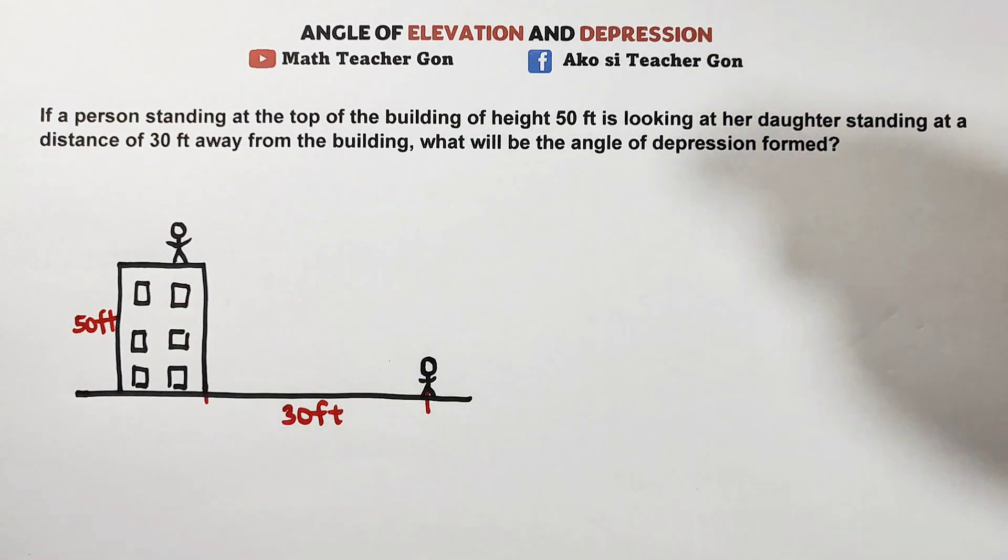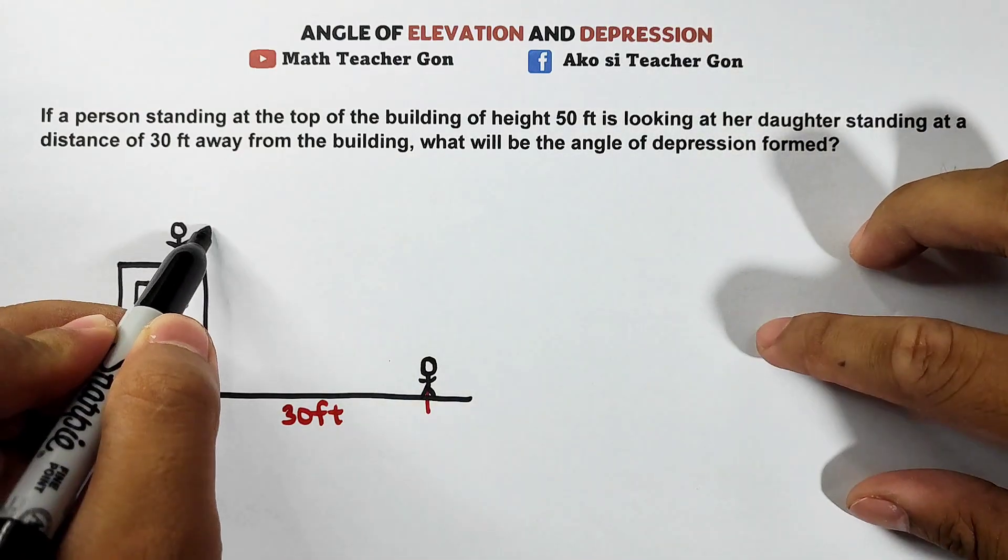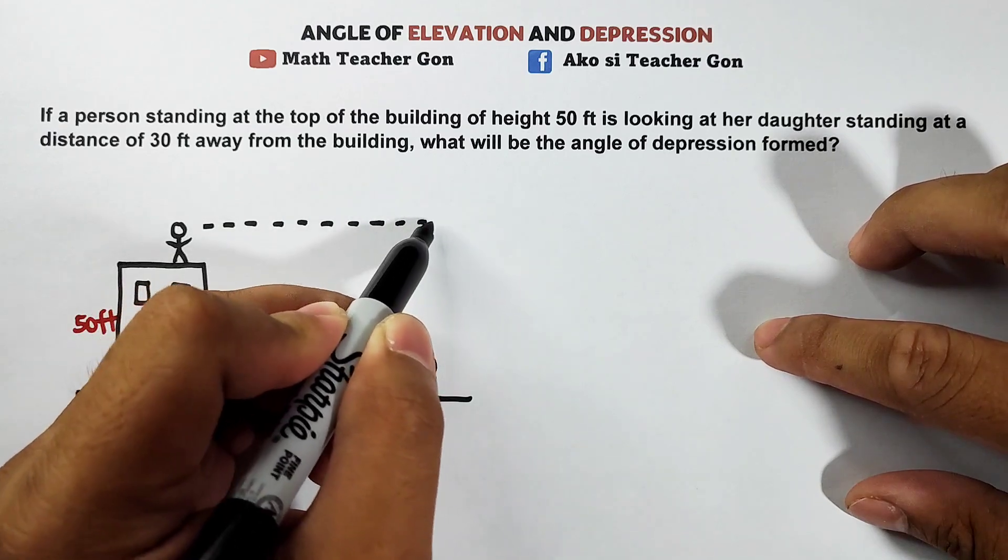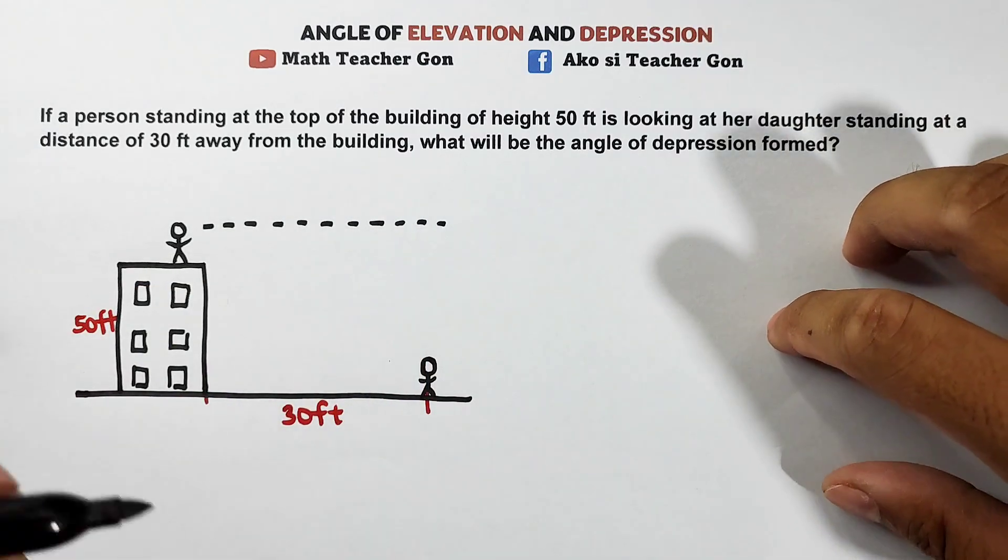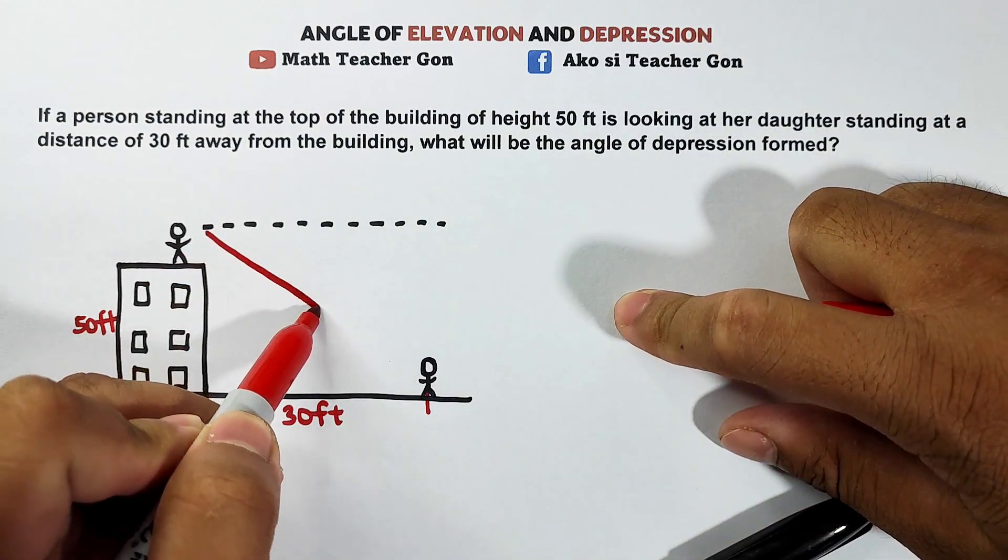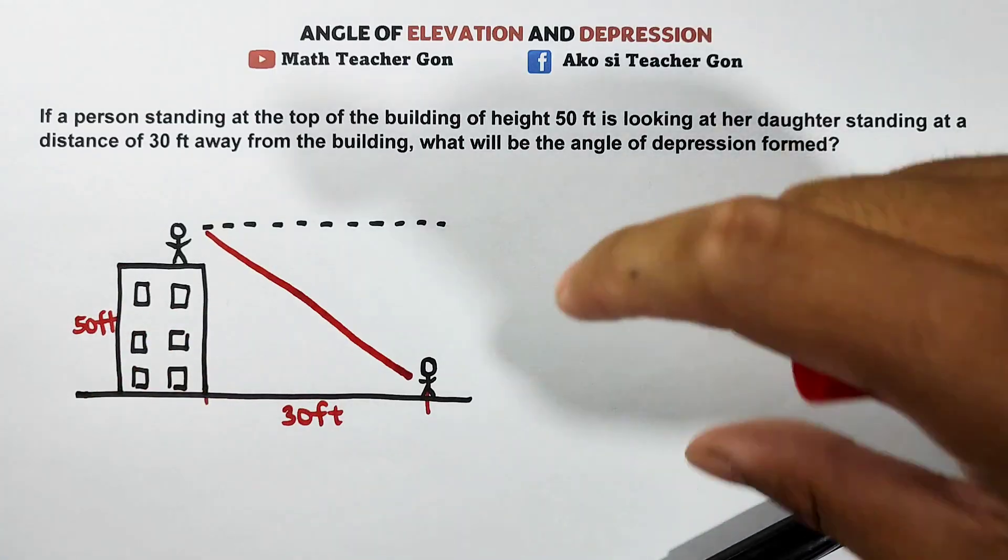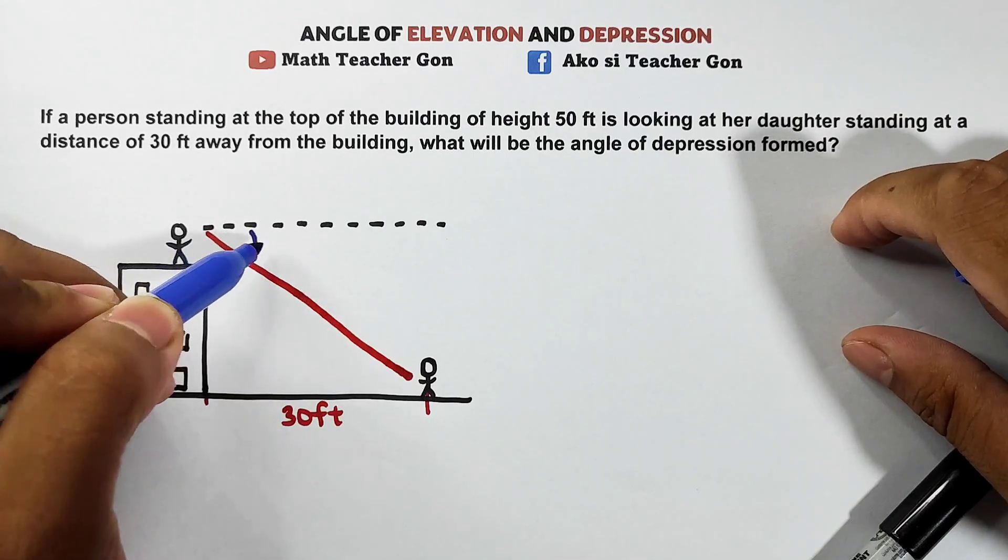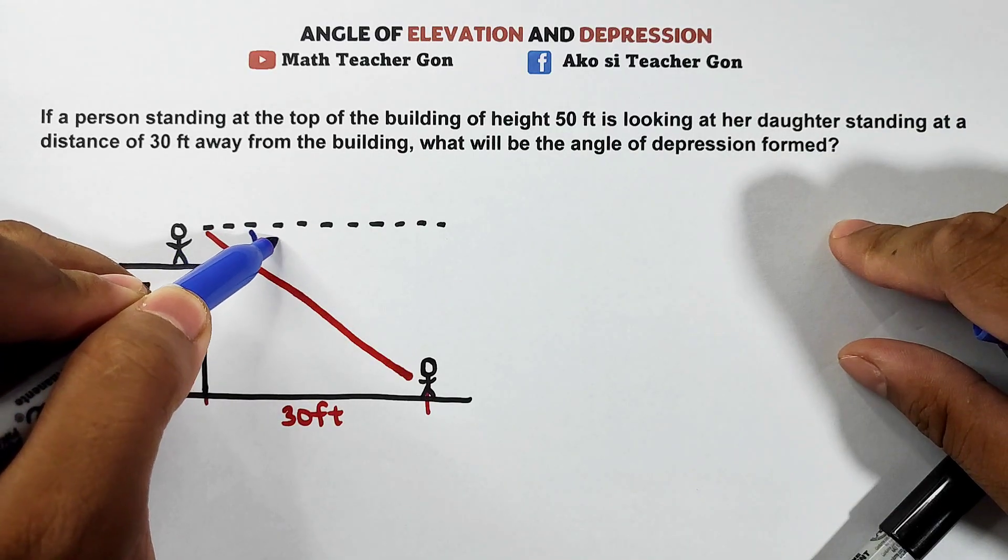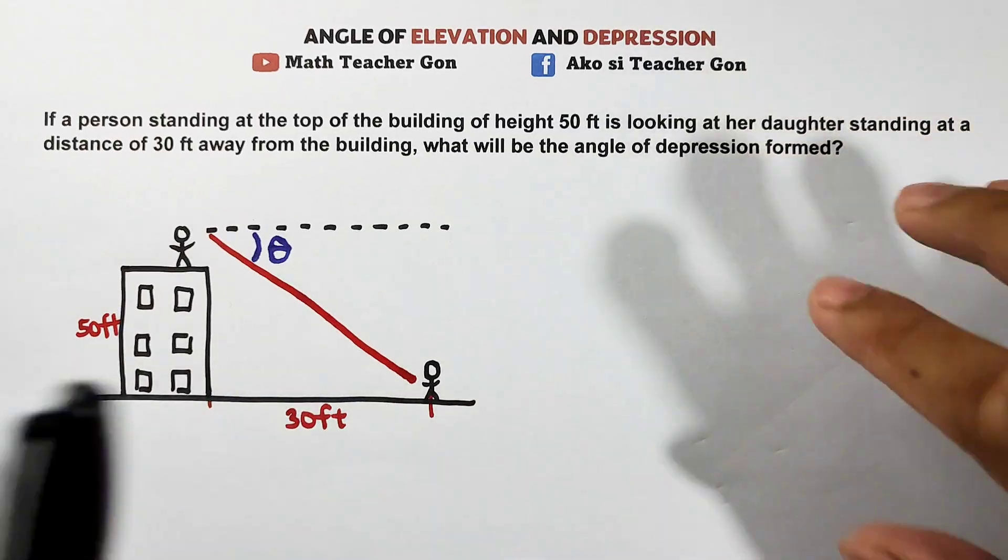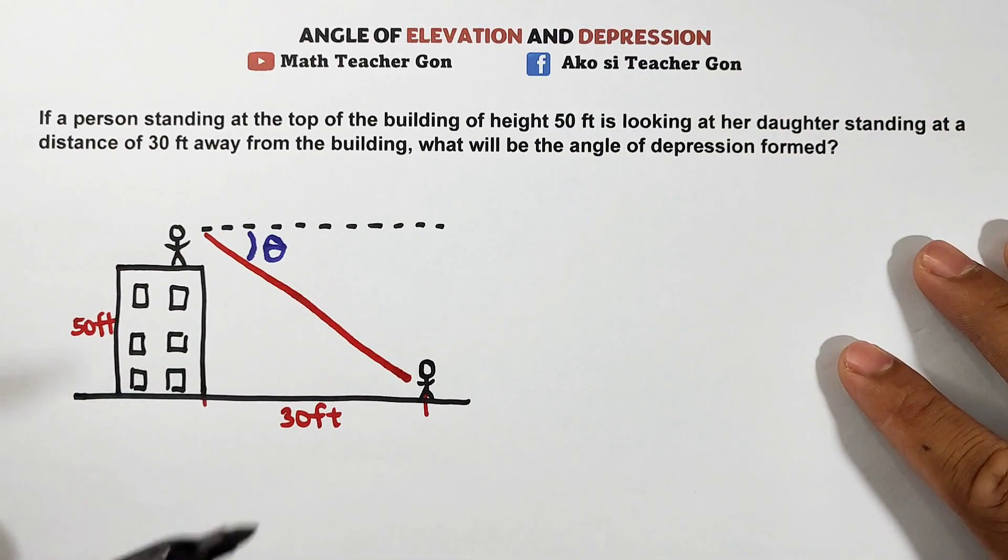Now the question is the angle of depression. So let's illustrate this correctly. Let's make a horizontal line of sight. Then a line going here. So where is the angle of depression? Our angle of depression is here guys. This is what we're looking for. Let's call this theta. Now we'll have difficulty finding this because we don't have given parts here. Look carefully. I want you to understand this one. We don't have a part here.